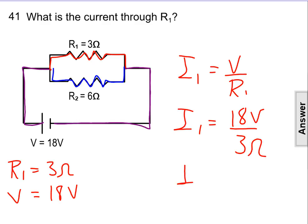The current through resistor 1 is 6 amps.